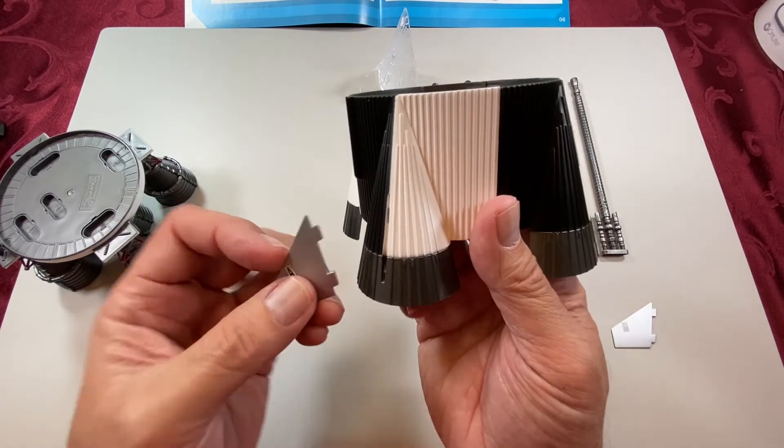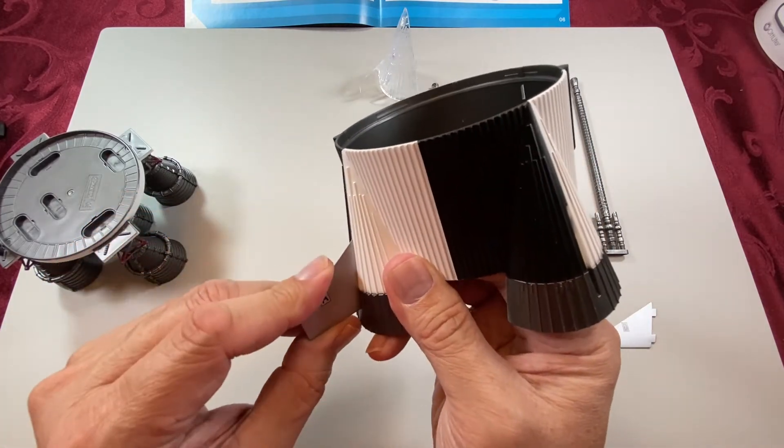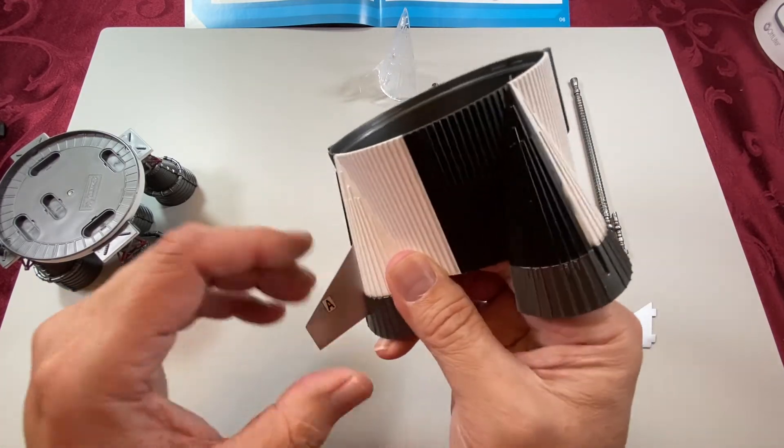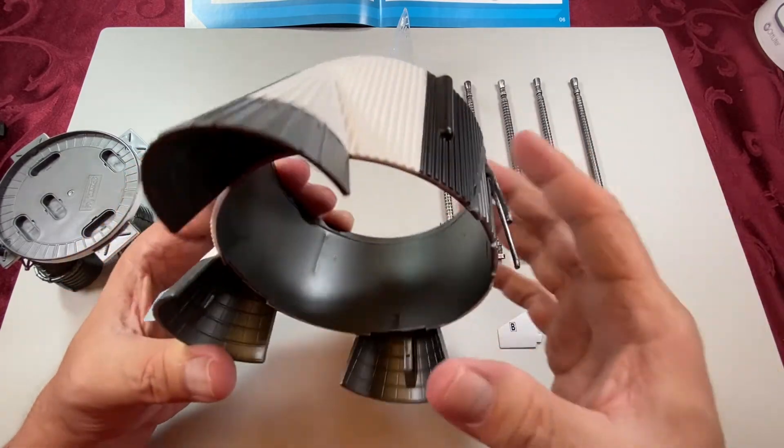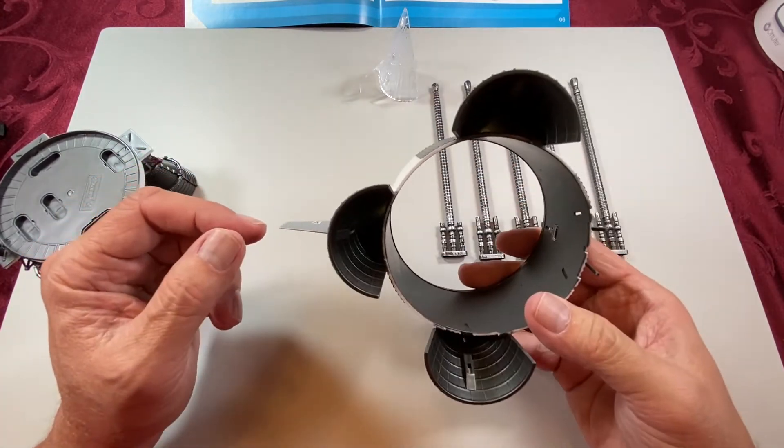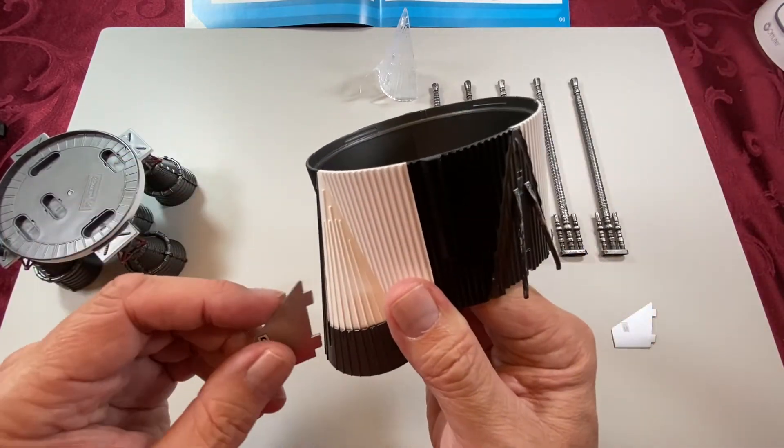Again, two corresponding holes. This one has a little tighter fit, still could come out pretty easy. We'll figure out if we're going to super glue this later. Should stay in there well enough that we're not going to lose it.